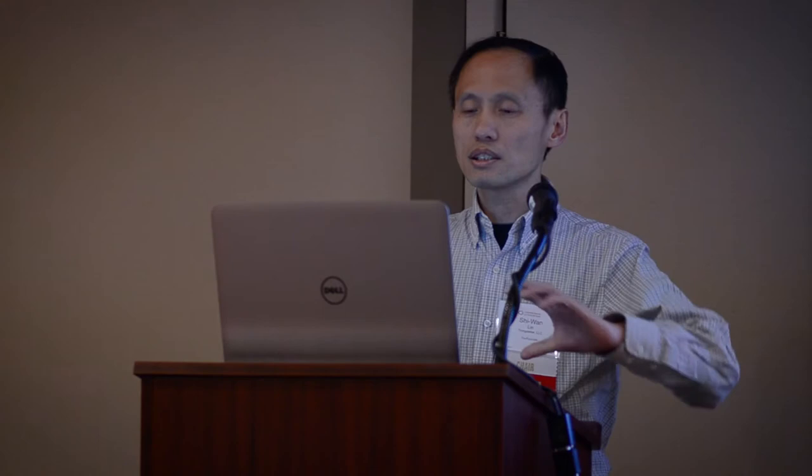We have viewpoints capturing architectural concerns starting from the business value perspective. We identify those concerns specific to the particular system we want to build, and then try to resolve those concerns and provide solutions. Through the exercise we create many artifacts — many of them based on existing or new models — and when we capture those models, they will form the business view or usage view depending on what kind of concerns they are trying to address. The totality of these outcomes will constitute the concrete architecture for an IoT system — a concern-resolution-driven architecture template for creating an implementable IoT system architecture.